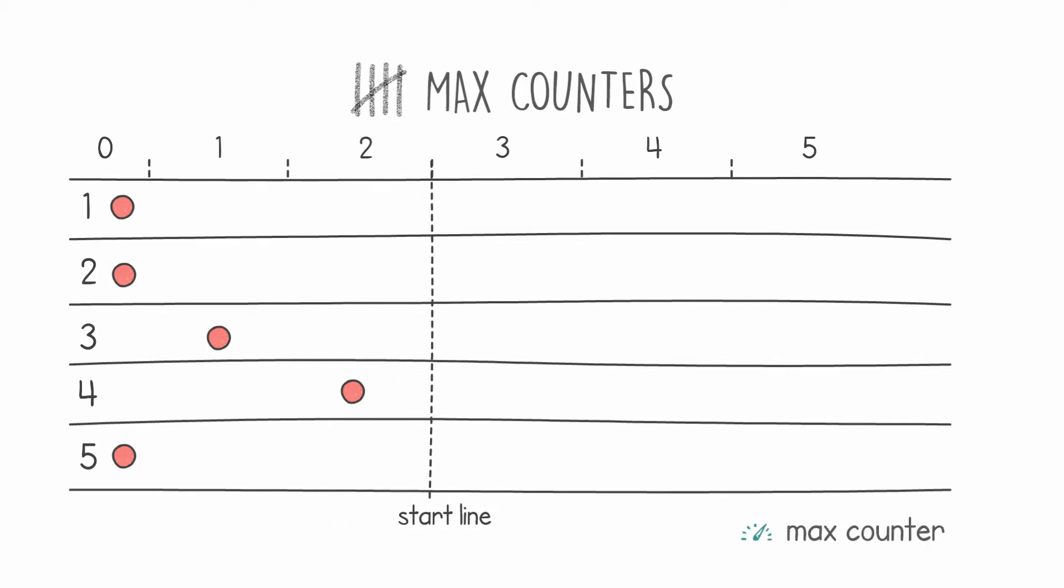The next part of that hint is: what do we do when we get an increase for a counter that is behind the starting line?